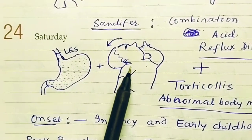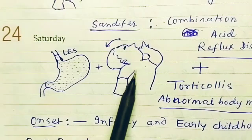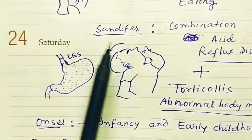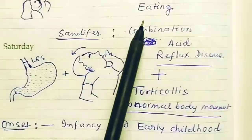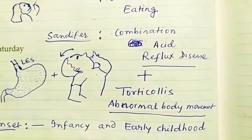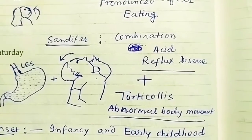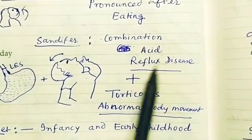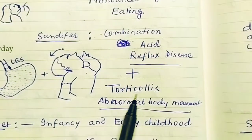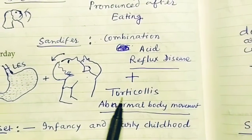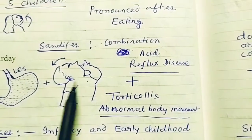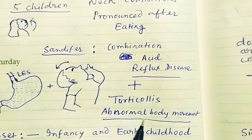Along with GERD, you can see the paroxysmal spasm of the head and neck, which is found in children. When these two combine, we get Sandifer Syndrome. Essentially, Sandifer Syndrome is the combination of acid reflux disease along with torticollis — abnormal body movement.